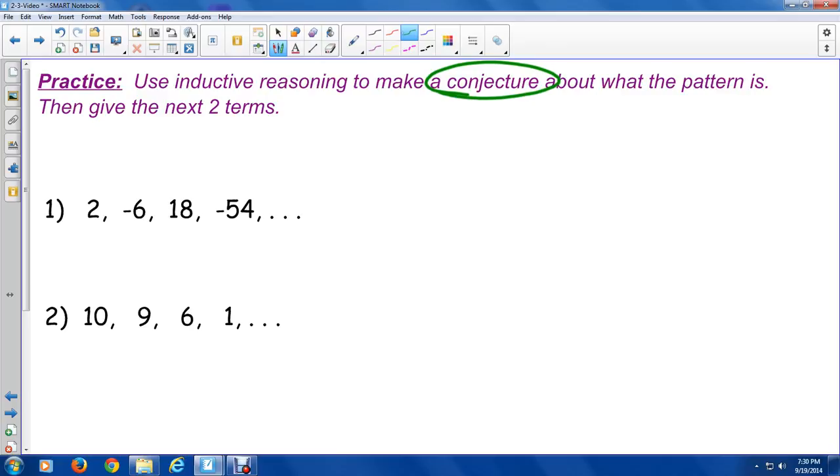So in the first one, I notice the numbers are going from 2 to -6 to 18 to -54. And they are changing signs. That's one way to think of it. We also can think that we could be multiplying or dividing by a negative. So take a look. See if you can figure it out. Maybe pause the video.